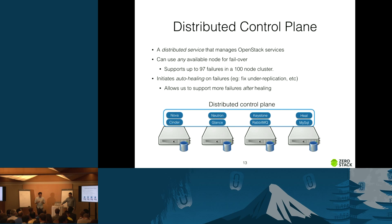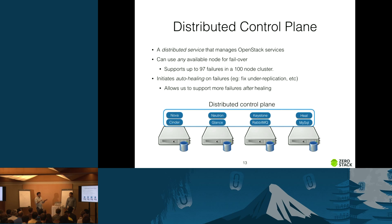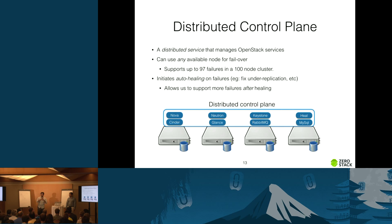Healing works as follows: when a node goes down, replication factor for its data decreases. The distributed control plane initiates healing to fix under-replication. Once healing completes, you effectively have a 99-node cluster that can tolerate one more failure. After each subsequent failure and healing cycle, the cluster shrinks by one but remains functional. This is how we achieve 97 node failures out of a 100-node cluster.